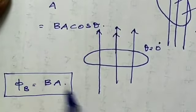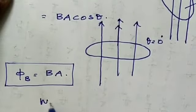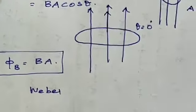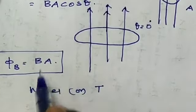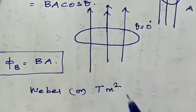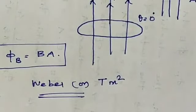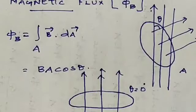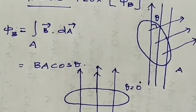The SI unit of magnetic flux is the Weber. We already know that magnetic field B is in Tesla and area is in meter squared. So the unit of magnetic flux is Weber, or equivalently Tesla meter squared. Magnetic flux is defined as the number of magnetic field lines passing through a given area normally.